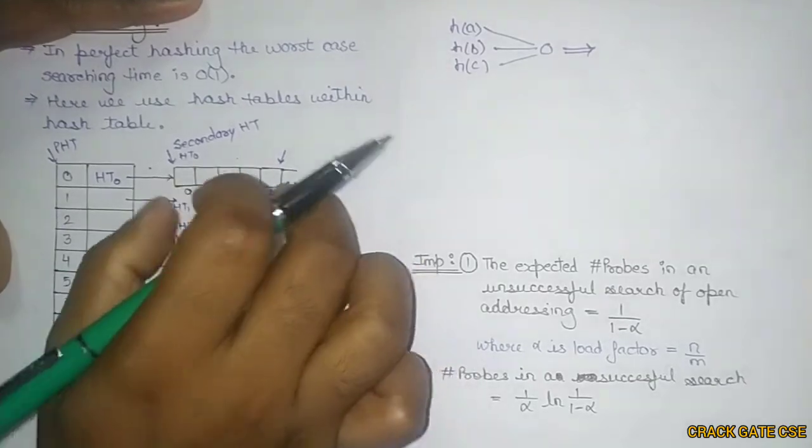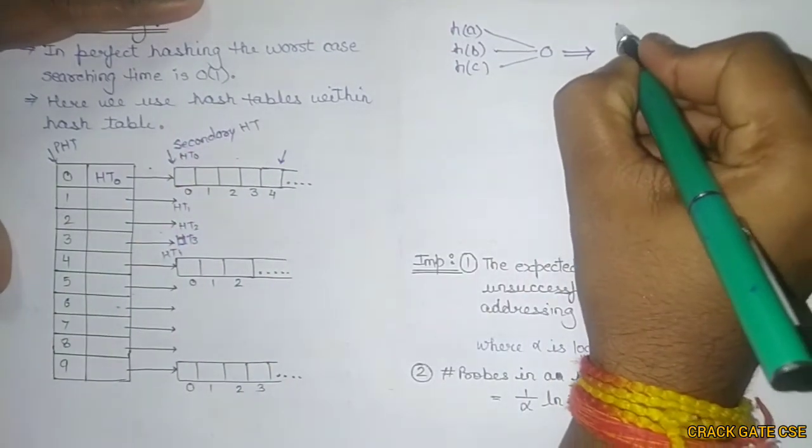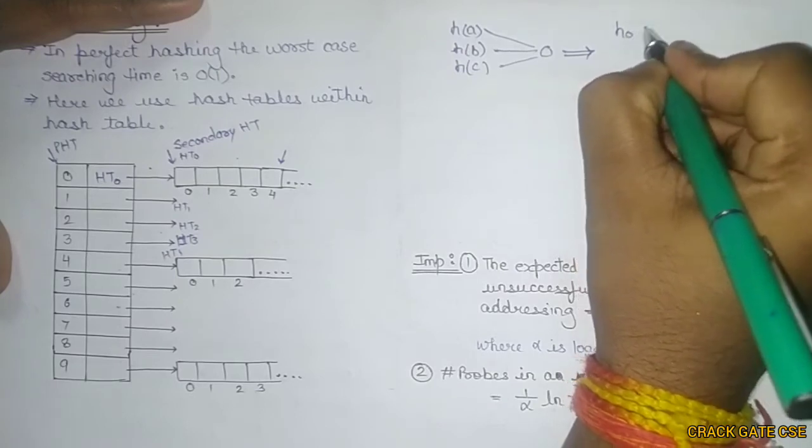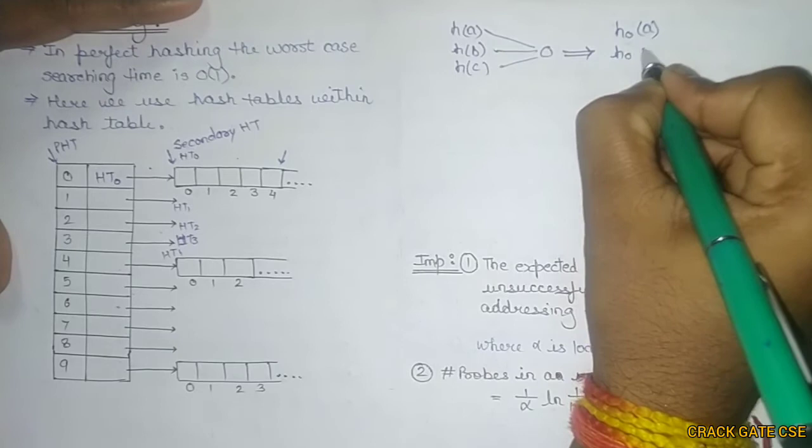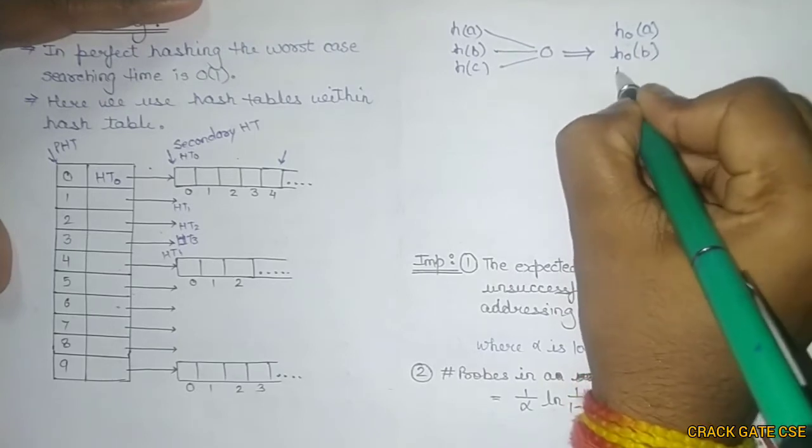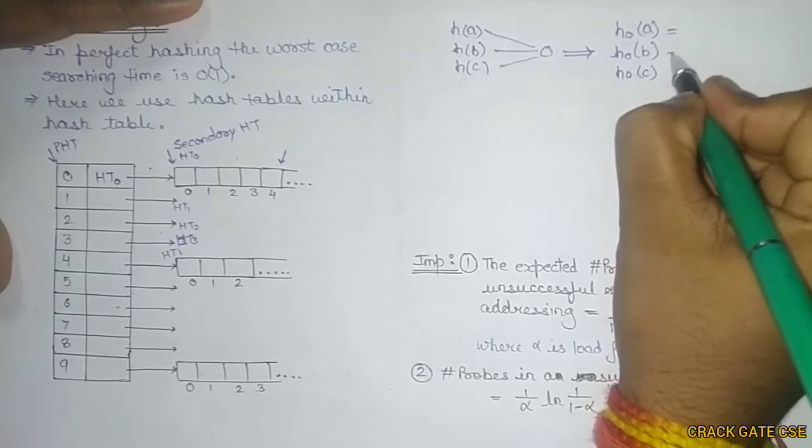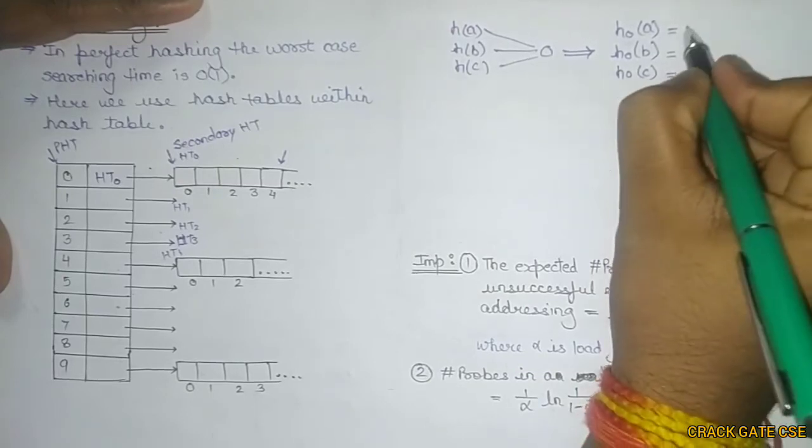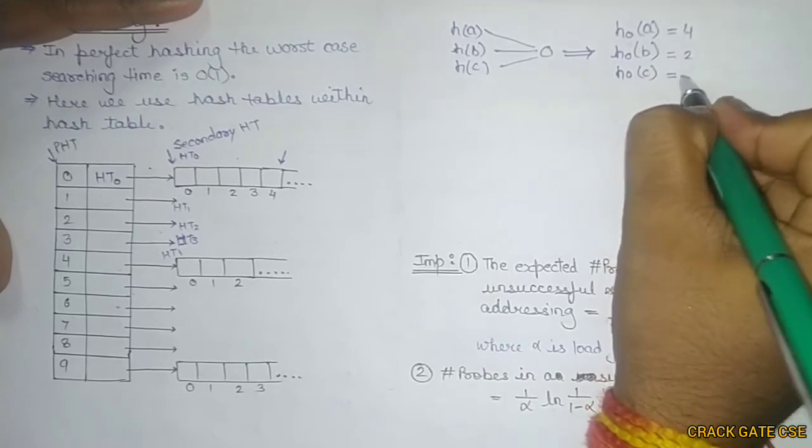There will be some hash function for this table also. Based on that hash function, let's say the hash function is h0. We'll be calculating h0(A), h0(B), and h0(C). They will be giving some values. Let's say this is 4, this is 2, and this is 0.